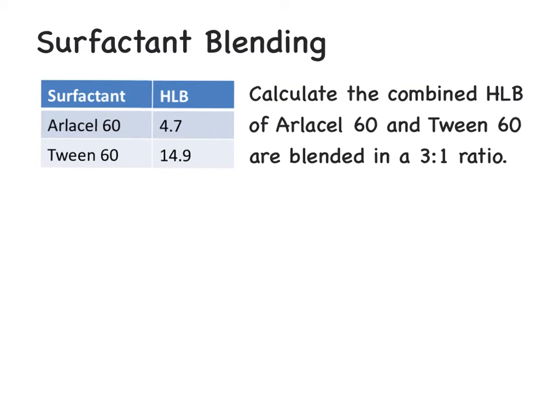Oftentimes, it's necessary to blend more than one surfactant together in order to achieve the desired HLB value. So what we'll do is quickly review those calculations. In this example, we want to combine together the Arlacel 60 and Tween 60 in a 3 to 1 ratio. So we're going to determine the fraction of each of the partners and multiply that by their respective HLB values, and we can sum them together.